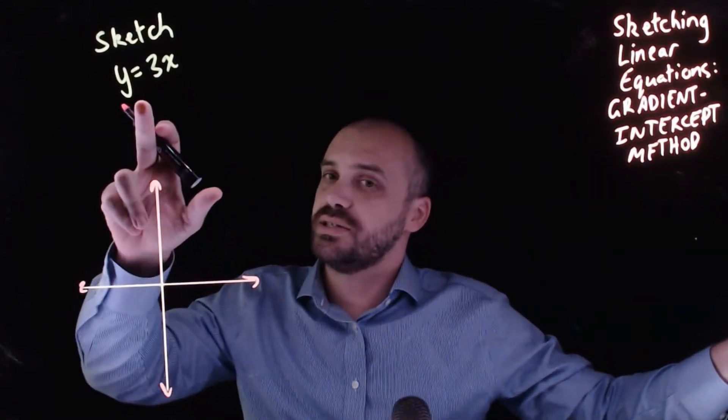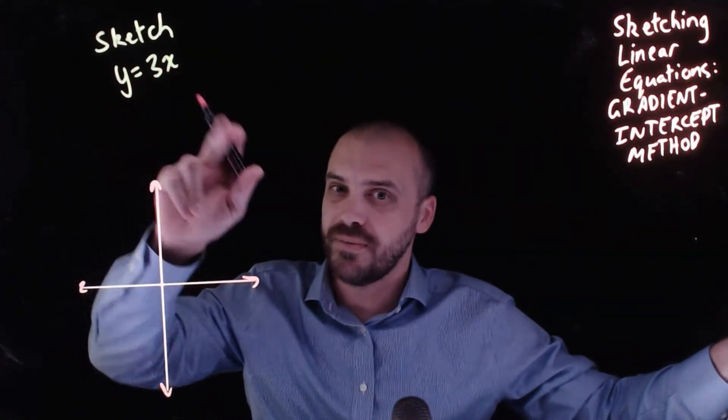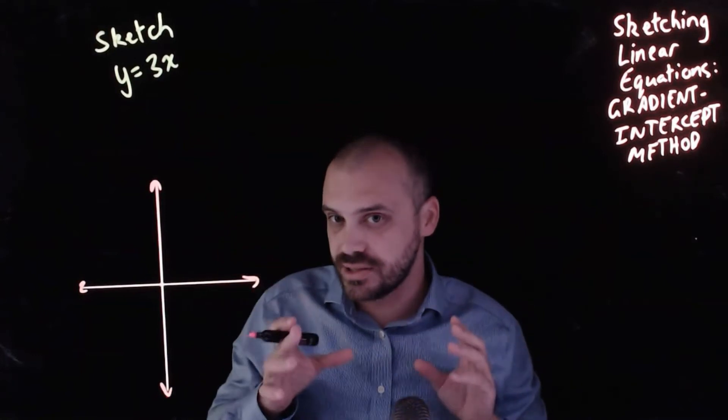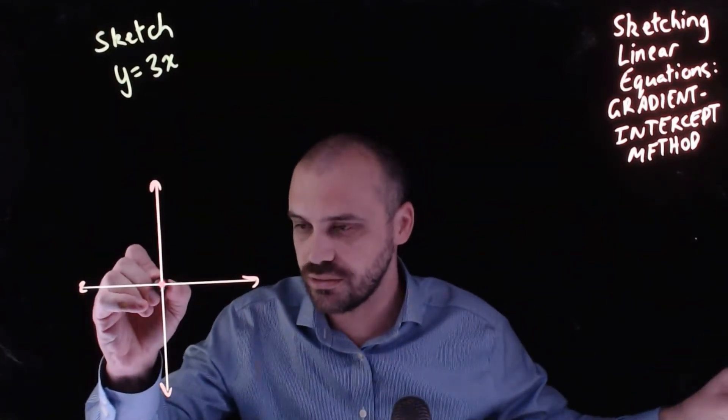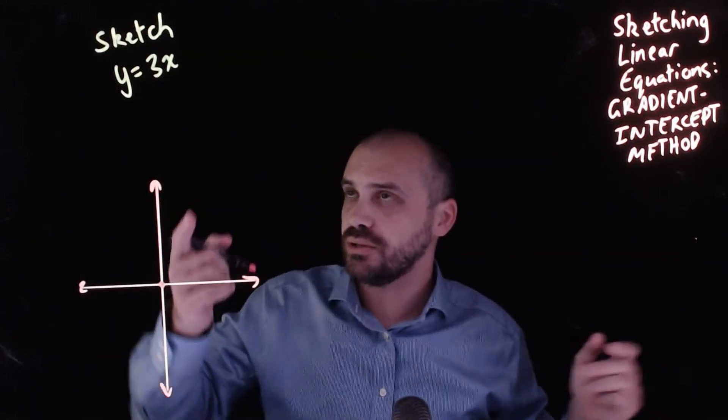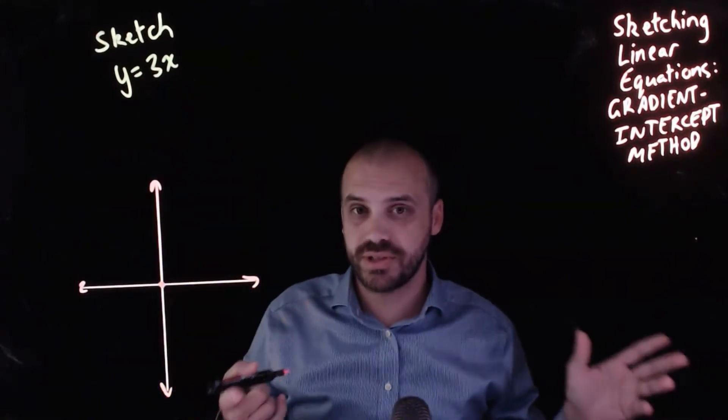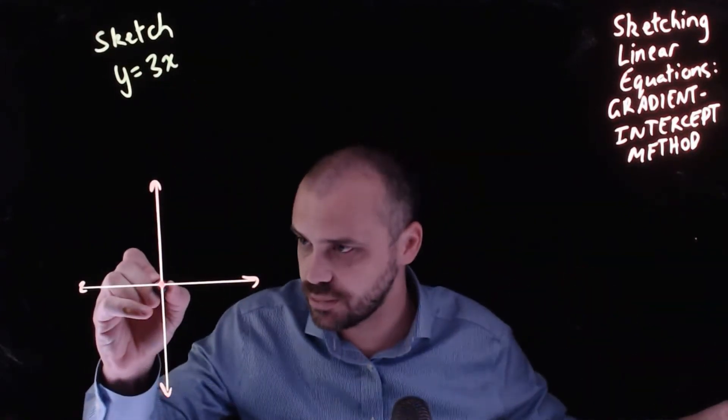Now the x intercept of this, if I let y equal 0, 0 equals 3x, the x intercept of this would be 0. Now what would the y intercept of this be? Well let x equal 0, y equals 3 times 0. The y intercept of this is also 0. Put another point there.